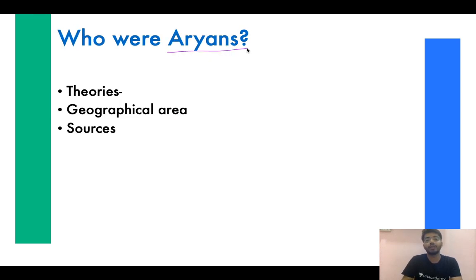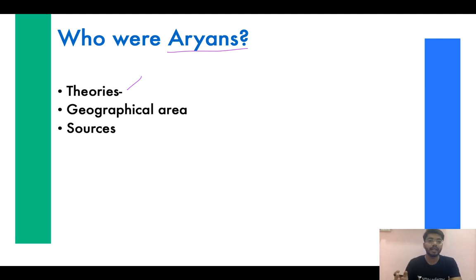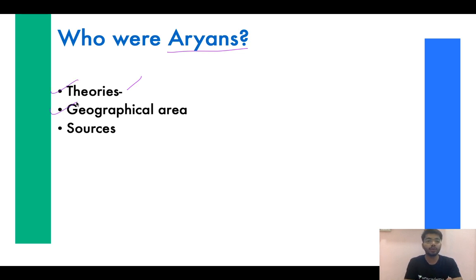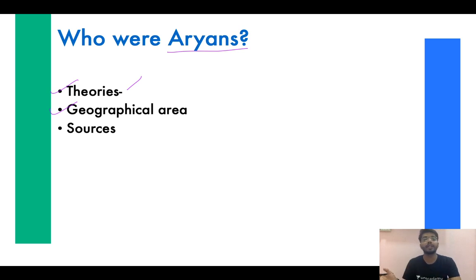A major question is: who were the Aryans — the inhabitants of the Vedic period? Different historians have given different theories. Max Muller proposed that Aryans came from Central Asia. Then came the Rig Veda-Avesta Link theory suggesting they came from the Persian region. There is also a Tibetan home theory and an Arctic home theory. We need to study these theories, their criticisms, and which theory was finally accepted. The geographical area is also important — where exactly the Aryans settled during the Early Vedic period in the Saptasindhu region, and how they later shifted towards the Ganga-Yamuna doab region.